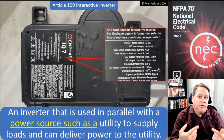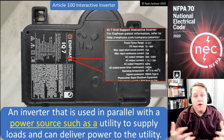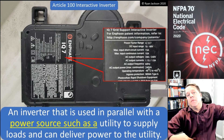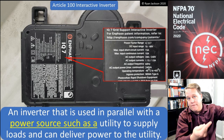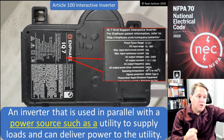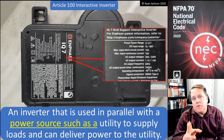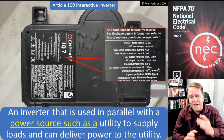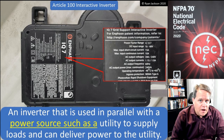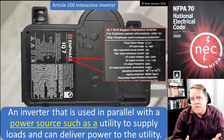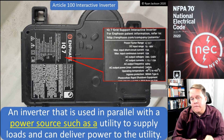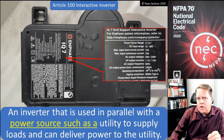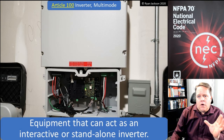With solar, we want it on all the time to produce energy and get a return on our investment. But what happens when the utility loses power — does our solar system back-feed the grid and electrocute utility workers? That's obviously not acceptable. What some people aren't aware of: with a PV system using an interactive inverter, the inverter shuts off when the utility loses power. So you won't be able to use your PV system as a backup unless you install additional equipment.